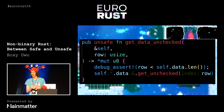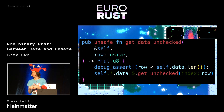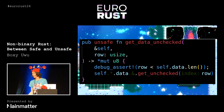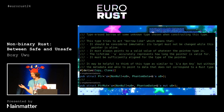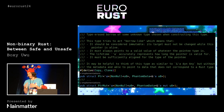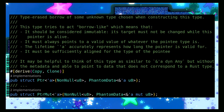When really the only thing we care about is giving up the guarantee of what we're pointing to. So what we can do, now that we've figured that out, is introduce an abstraction that gives us back the guarantees that borrows have about the lifetime, but we still don't care about the type we're pointing to.